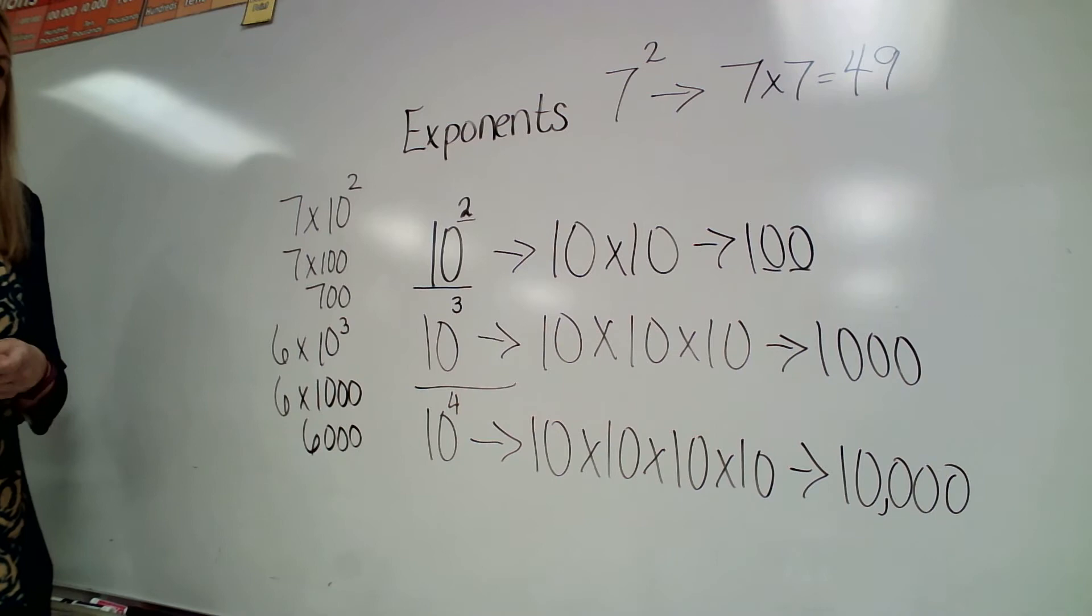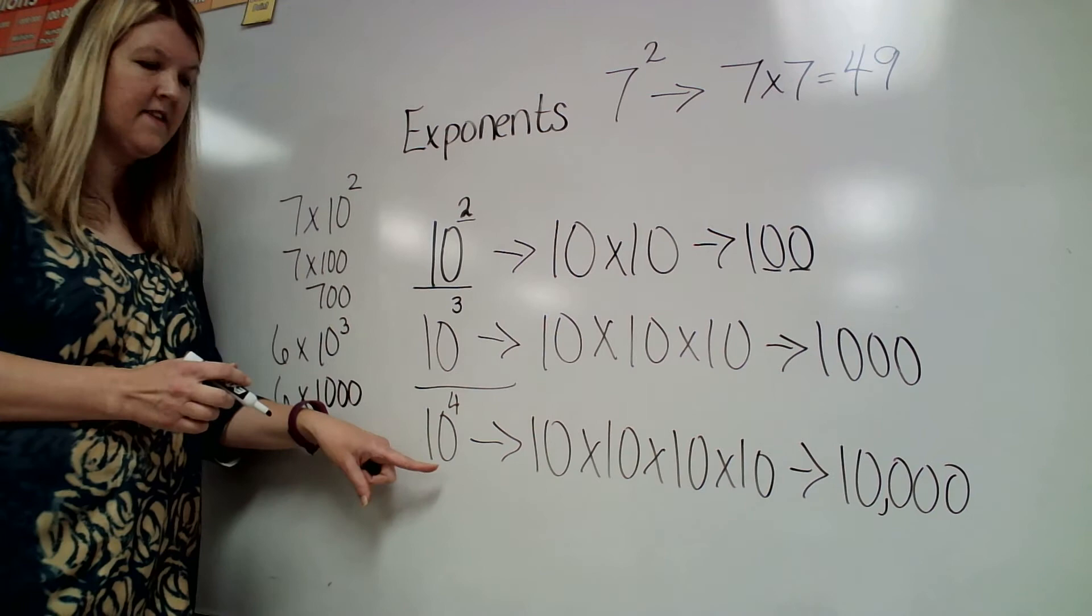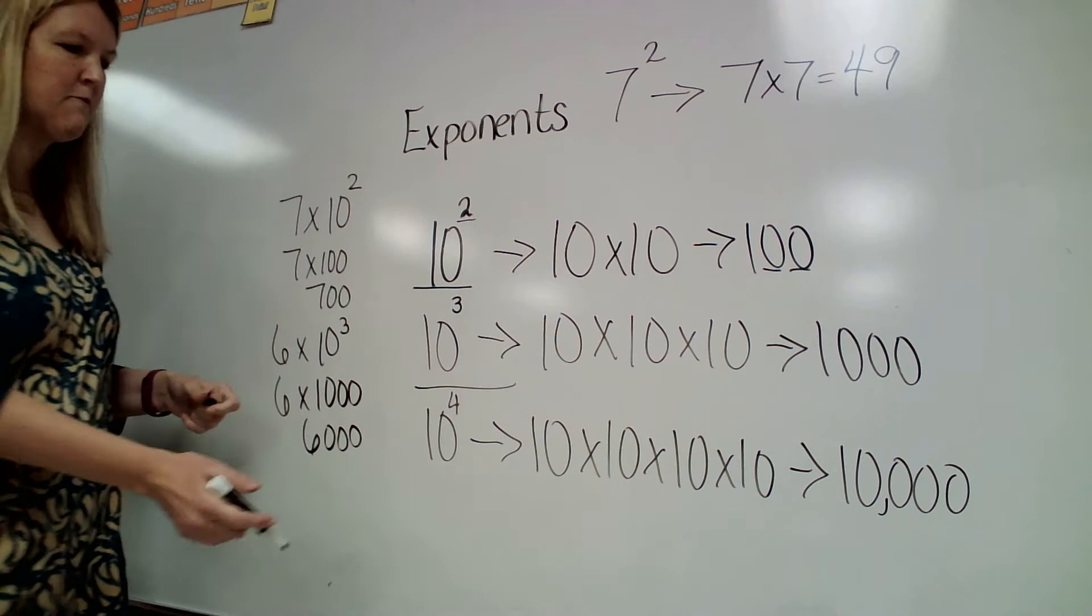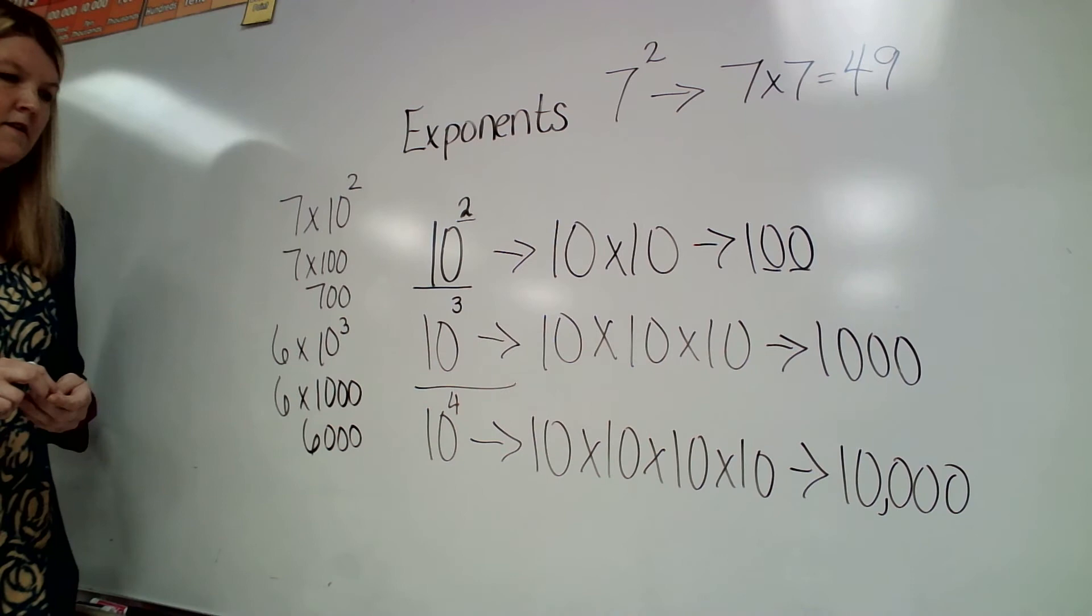So I can write them like this. One thing that you don't want to get mixed up, 10 to the 4th power is not 10 times 4. We know that this is not going to be 40, so don't get confused with that. That means that we multiply the 10 – we repeat the 10 four times using multiplication.